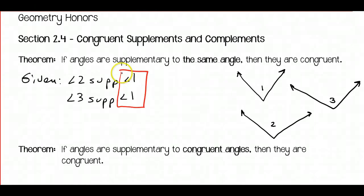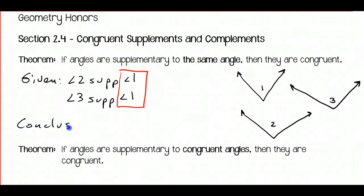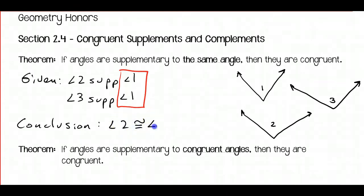I like to use visual cues with boxes or circles or whatever you're comfortable with. Based on this theorem, angle 2 and angle 3 are both supplementary to angle 1. So our conclusion would be that angle 2 is congruent to angle 3. If they're supplementary to the same angle, they've got to be congruent to each other.